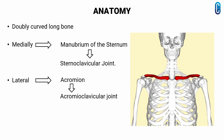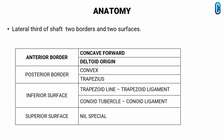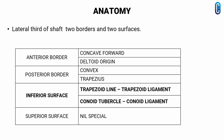At the lateral end, it articulates with the acromion at the acromioclavicular joint. The shaft is divided into the medial two-thirds and lateral one-third. The lateral third of the clavicle has two borders and two surfaces. The anterior border is concave forward and gives origin to the deltoid muscle, while the posterior border is convex and gives attachment to the trapezius muscle. The inferior surface has a ridge called the trapezoid line and a tubercle, the coracoid tubercle, for attachment with the trapezoid and coracoid ligaments — part of the coracoclavicular ligament. This serves to connect the clavicle with the coracoid process of the scapula. The superior surface of the lateral one-third of the clavicle contains no well-distinguishable features.